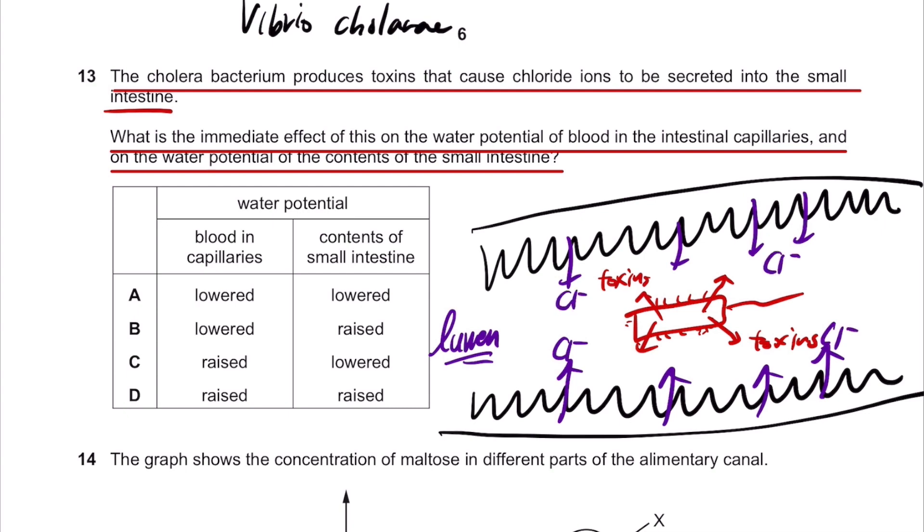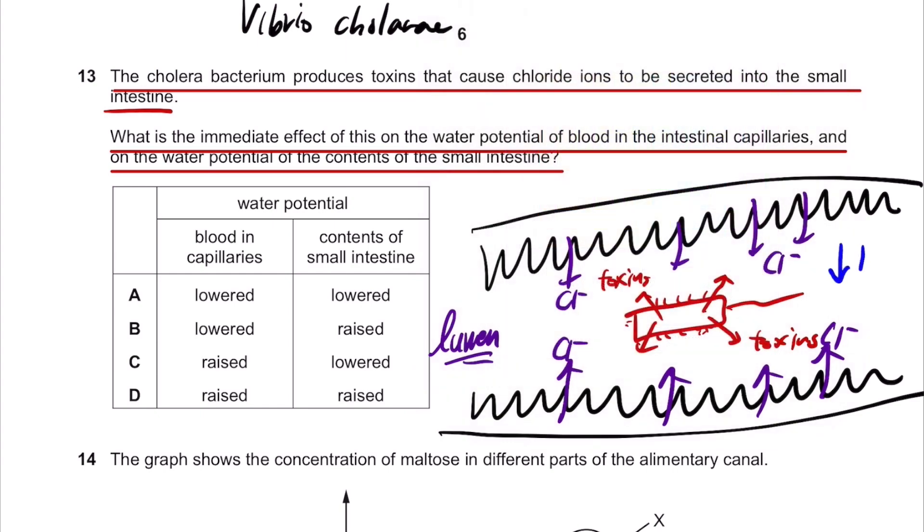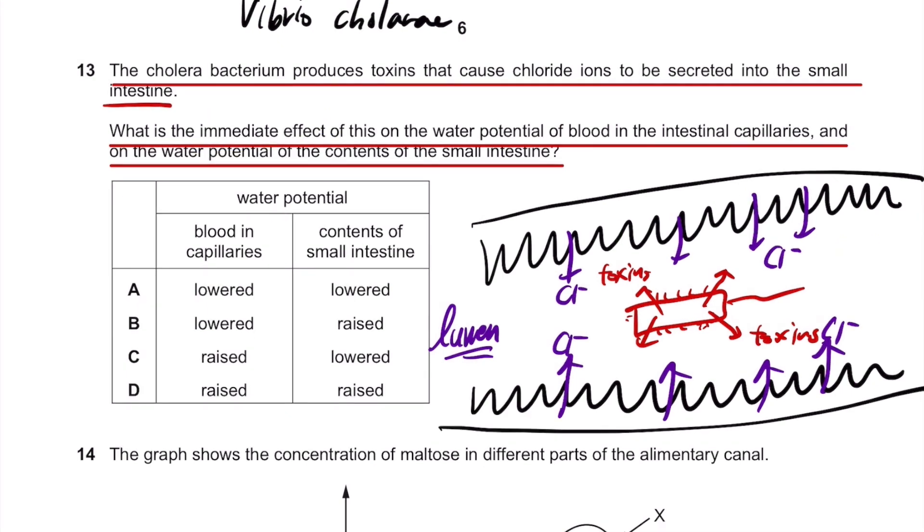which will decrease, which decreases the water potential of the small intestine. This question was asking the immediate effect of this. So since there are a lot of chloride ions in the lumen, relatively, the water potential in the lumen has decreased.